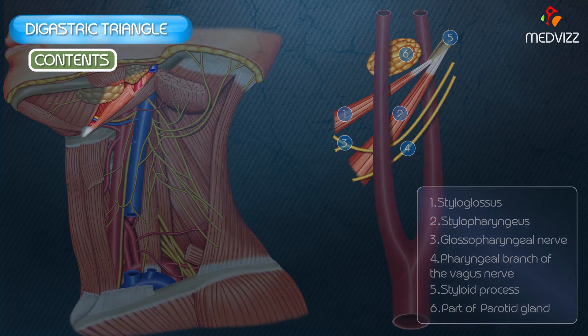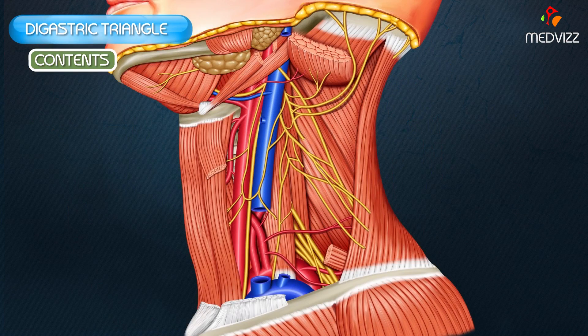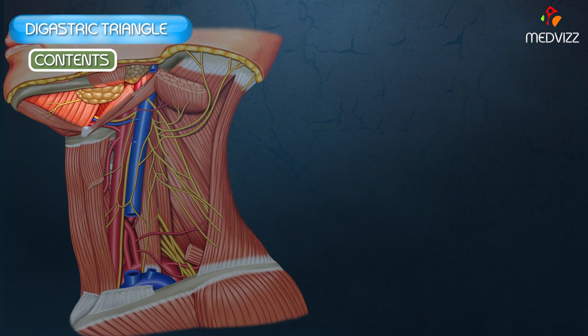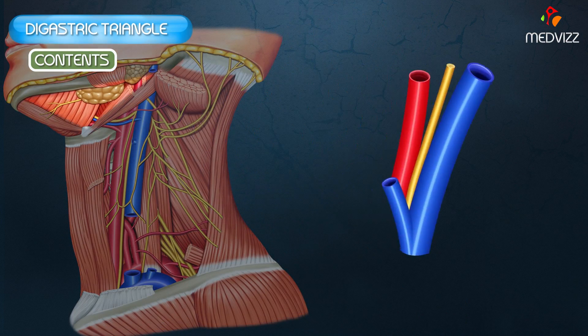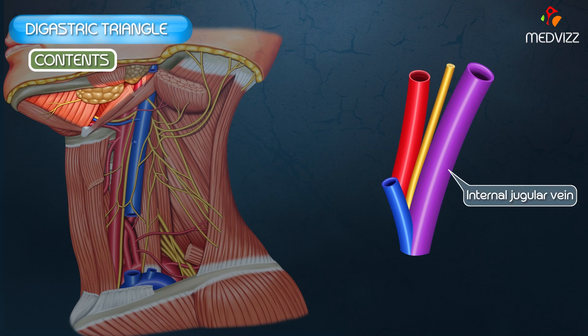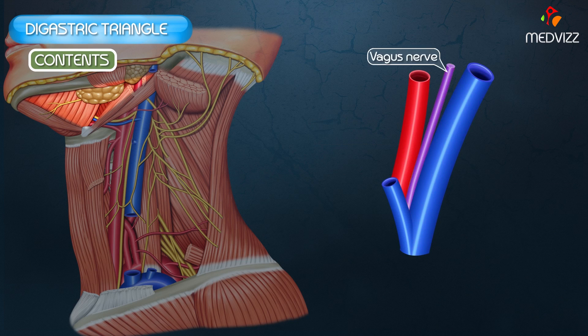The deep structures include the internal carotid artery, internal jugular vein, and the vagus nerve. This concludes the topic of the digastric triangle.